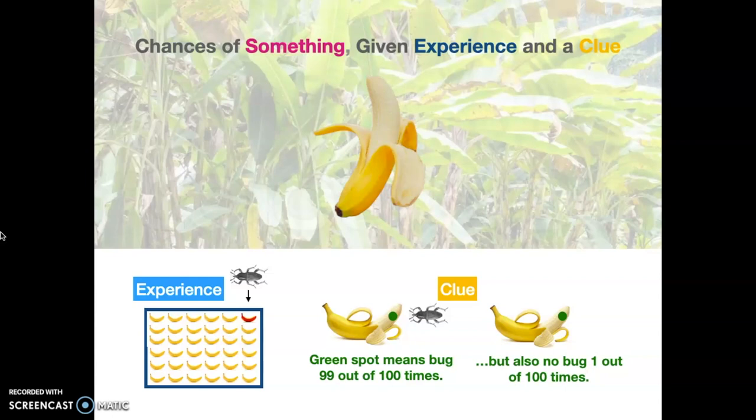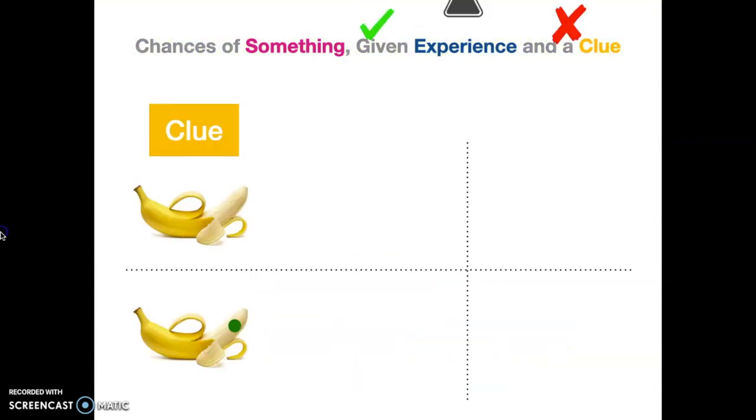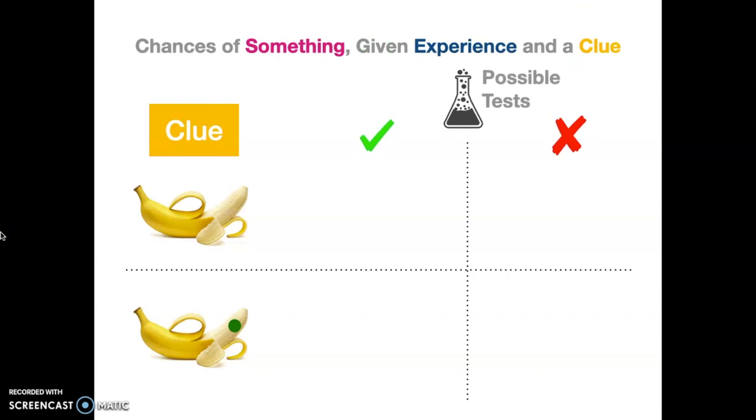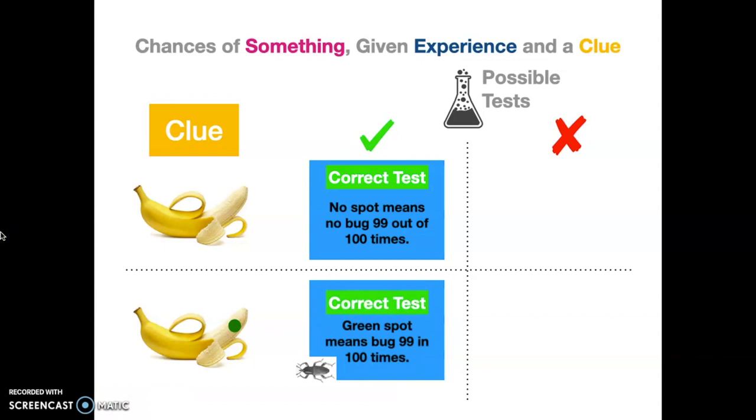Well, we've got to take into account both the experience and the clue. So it's not going to be one out of 36 because we open it up. There's no spot. We have additional information, right? You have that clue and you have different tests that are going on. You have tests that could be done correctly or tests where something went wrong. You have a correct test where no spot means no bug 99 out of 100 times. We've done lots and lots of different testing and we found out that 99 out of 100 times you show no spot, that means there's going to be no bug. We also have another correct test where the green spot means 99 out of 100 times there's going to be a bug. So these are fairly accurate tests.